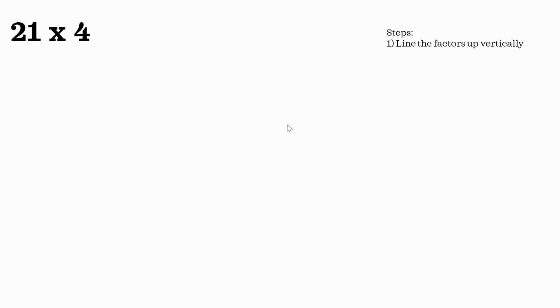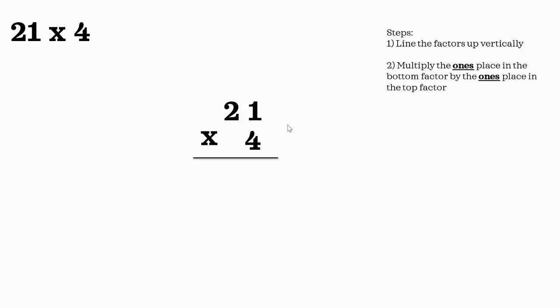Let's do one more together. Here we have 21 times 4. First we're going to line the factors up vertically, which means one on top of the other, making sure to line up the ones place. Now we're going to multiply the ones place in the bottom factor by the ones place in the top factor. 4 ones times 1 one equals 4 ones, which is why the 4 is in the ones place.